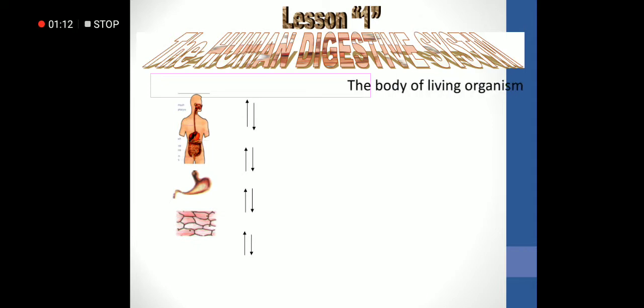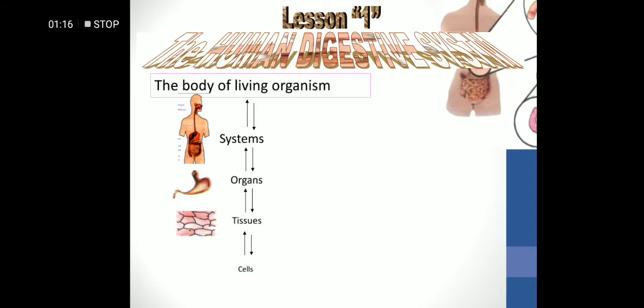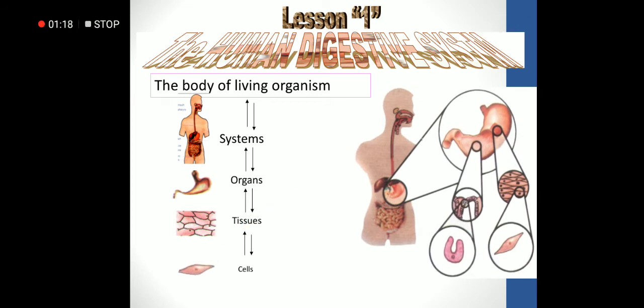First, what does 'system' mean? The body of a living organism consists of a group of systems. Each system consists of a group of organs, and each organ consists of tissues. Each tissue consists of a group of similar cells.